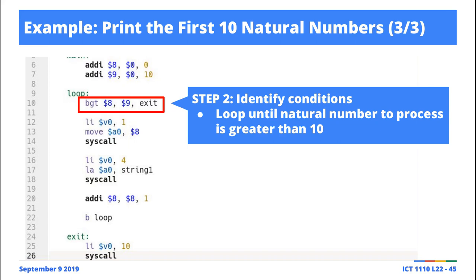So the first time you're executing the loop, you'll notice here the value of 8 is going to be 0. So it'll be like BGT, 0, 10. Is 0 greater than 10? No, it's not. So you don't go to this exit loop. You're going to continue processing these things here.